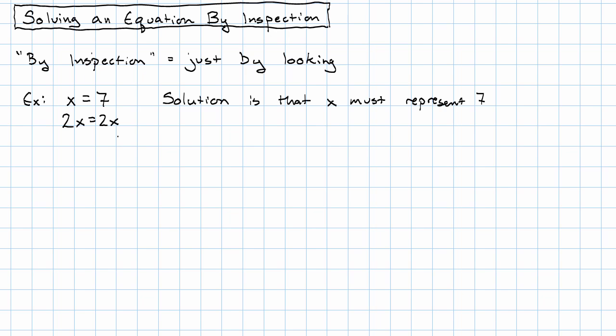2x equals 2x. Some expression is equal to exactly the same expression. Those are obviously equivalent. The solution is obviously all real numbers. It's obvious that every number is a solution.